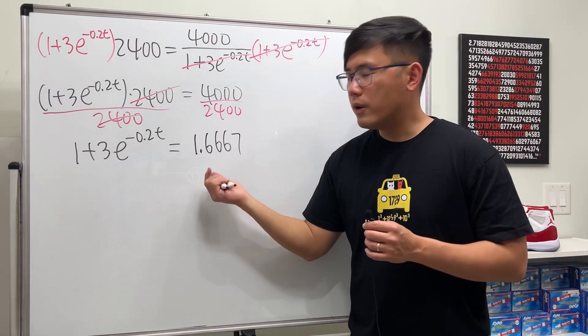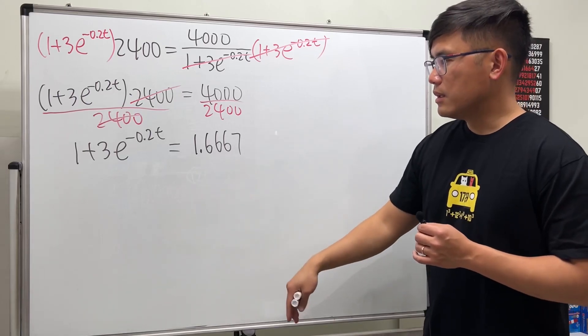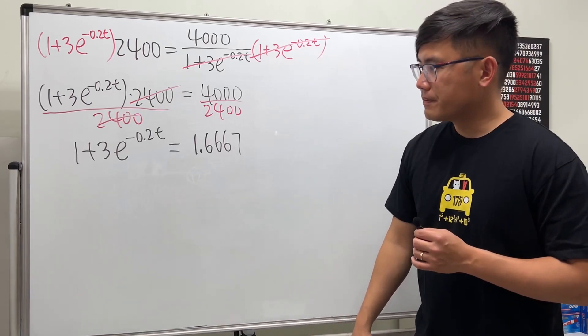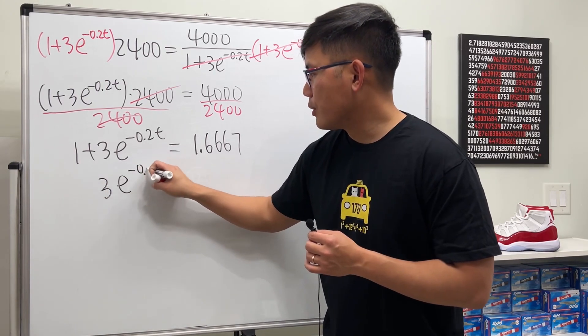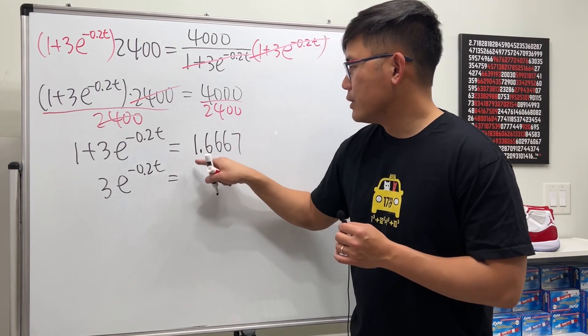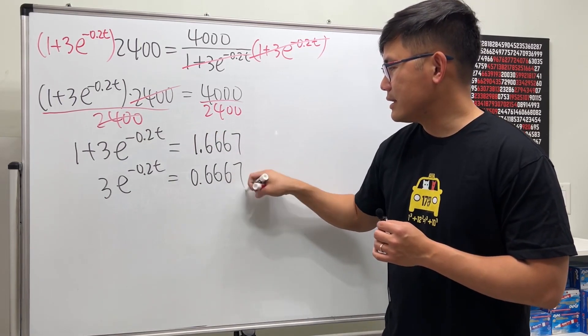Next we subtract 1 on both sides, so we get 3 times e to the negative 0.2t equals 1.6667 minus 1, which is 0.6667.